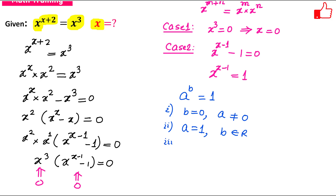And the third situation is a equals to minus 1 and b is an even number. So we will consider each case.